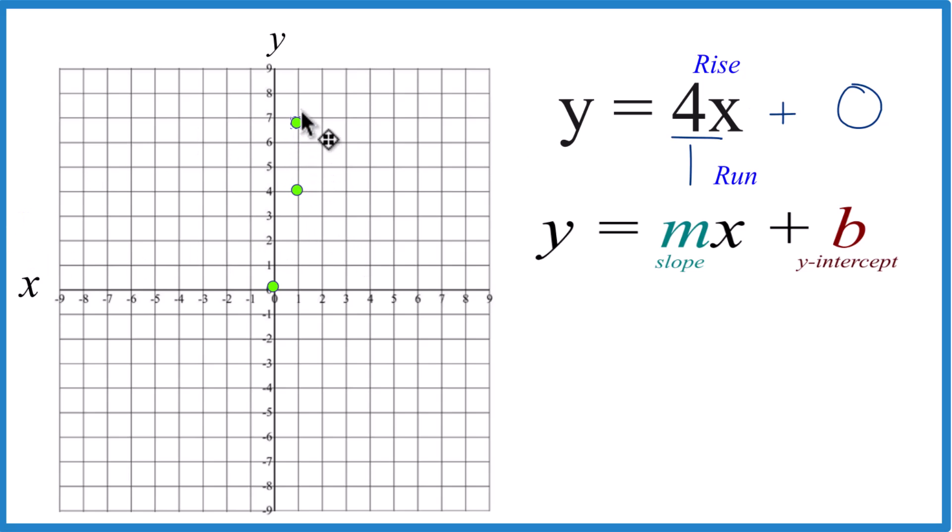From there, rise 1, 2, 3, 4, go over 1 and you can see the line. We can even go in the opposite direction, down 1, 2, 3, 4, 1 to the left, and then down 1, 2, 3, 4, 1 to the left.